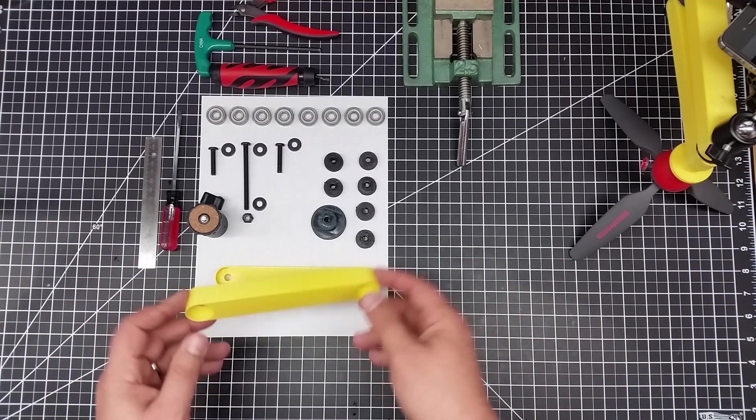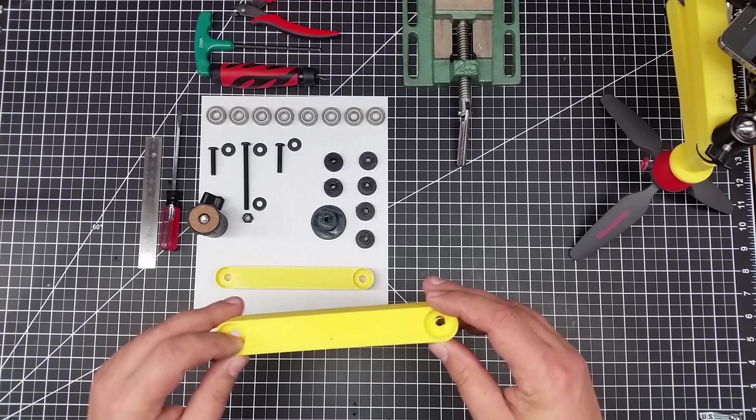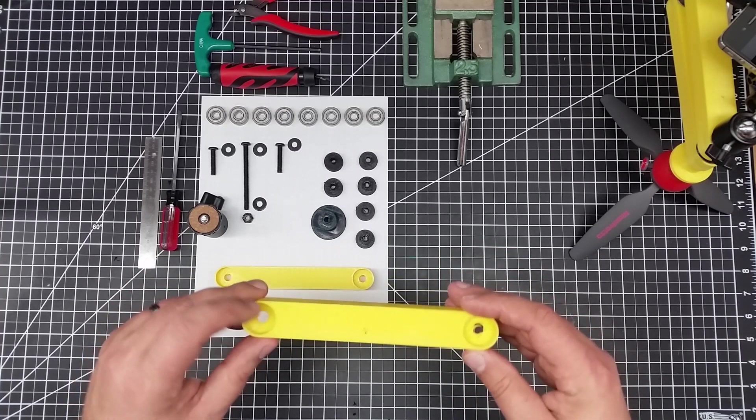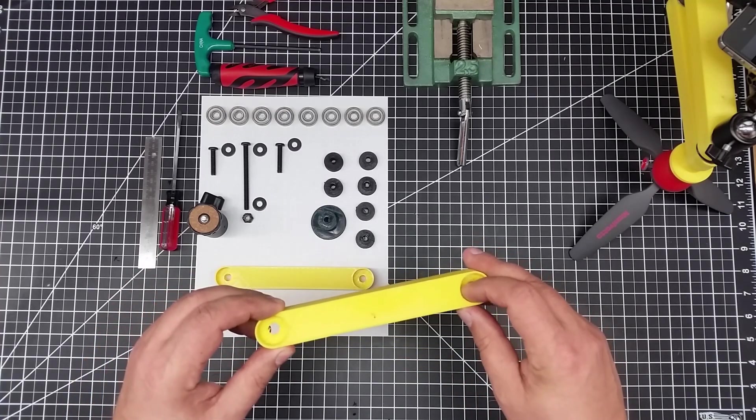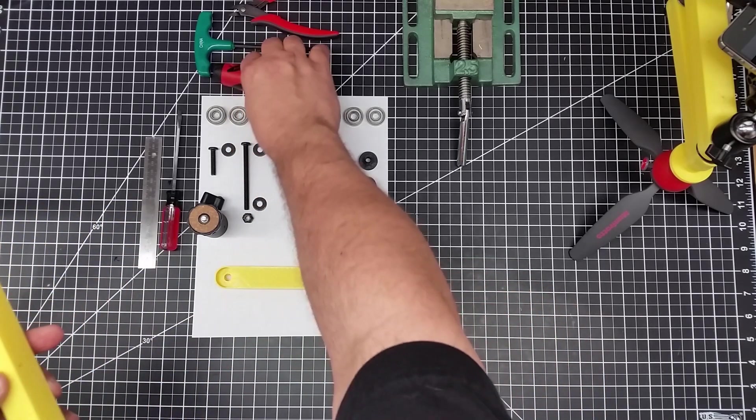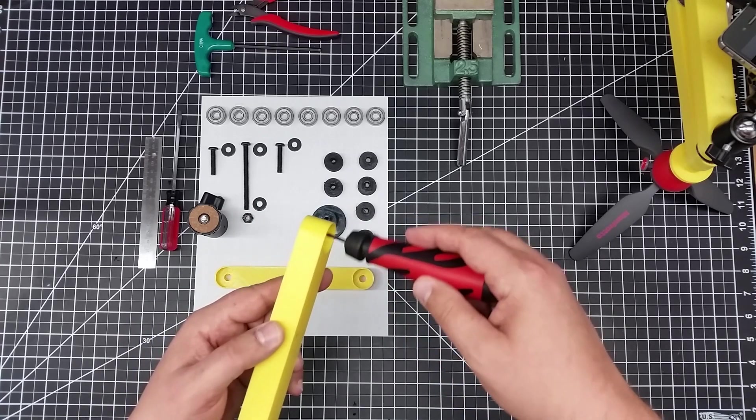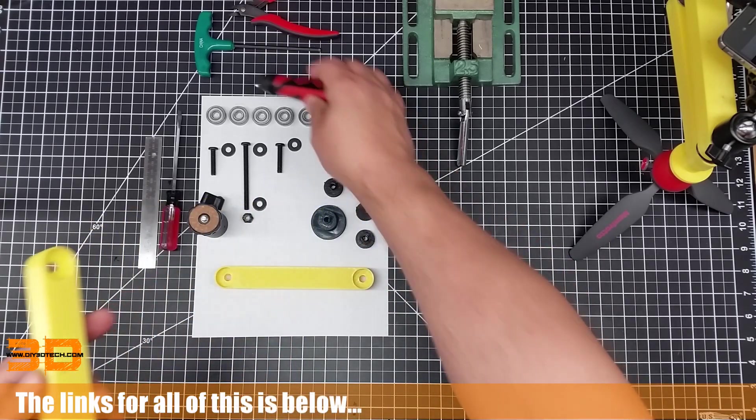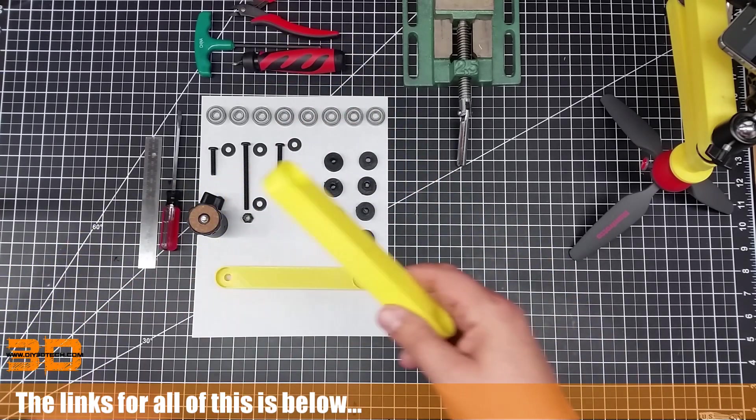So one of the first pieces is going to be the arms. Now you will have to print these. I recommend printing these with support. So you see a little bit of infill support that I've cleaned out here sitting on the bed like this. Also, what I do is I take a clean-out tool, run it around the inside of this race to taper it a little bit to insert the bearings.